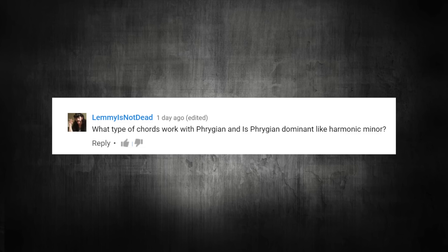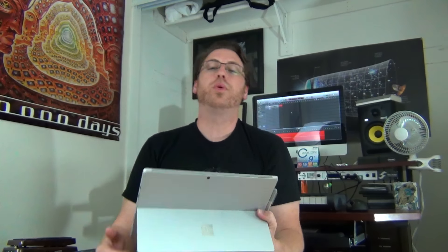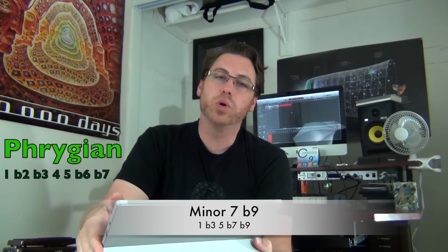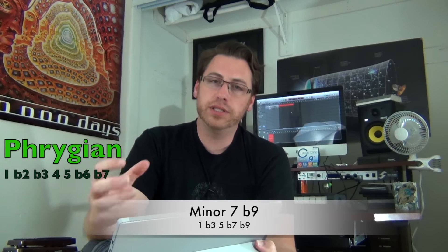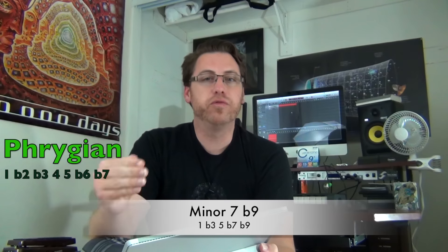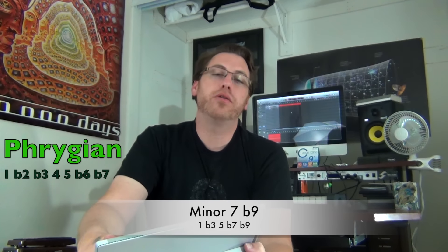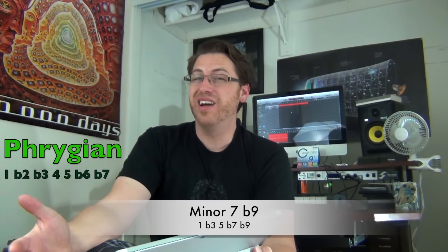First question: what type of chords work with Phrygian, and is Phrygian dominant like harmonic minor? Phrygian is the third mode of the major scale and the chord that specifically comes out from Phrygian mode is a minor 7th chord. The characteristic of Phrygian is that half step above the root, or a flat 9, so when you make the minor 7 or minor 9 chord, it's actually a flat 9 — a minor 7 flat 9 chord.